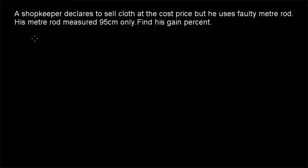Hi friends, welcome to today's class. Today's question is: a shopkeeper declares to sell cloth at cost price, but he uses a faulty meter rod. His meter rod measures 95cm per meter. Find his gain percentage. These types of questions come under the category of faulty measurements — by using faulty measurements, what is the gain percentage obtained?